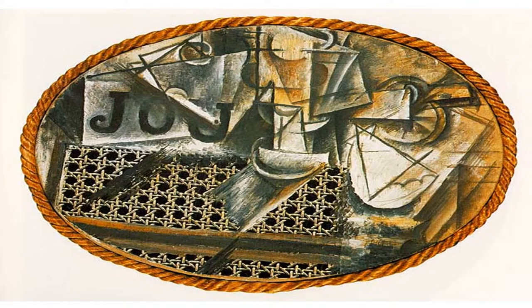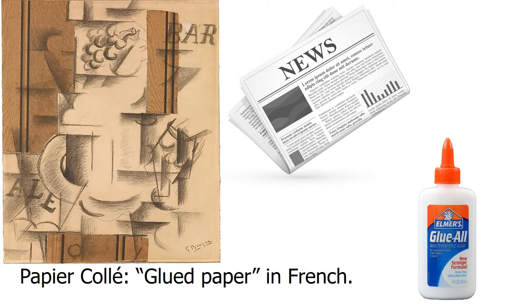Both Picasso and Braque incorporated different elements to liven and revitalize the style. Picasso began gluing printed images from the real world on the surface of his still life. His painting, Still Life with Chair Caning, was the first example of the collage technique and opened the door for himself and other artists as well. Braque began to glue newspapers to his canvases, beginning the exploration of papier collé. Papier collé is derived from the French word coller, which means to paste or glue.